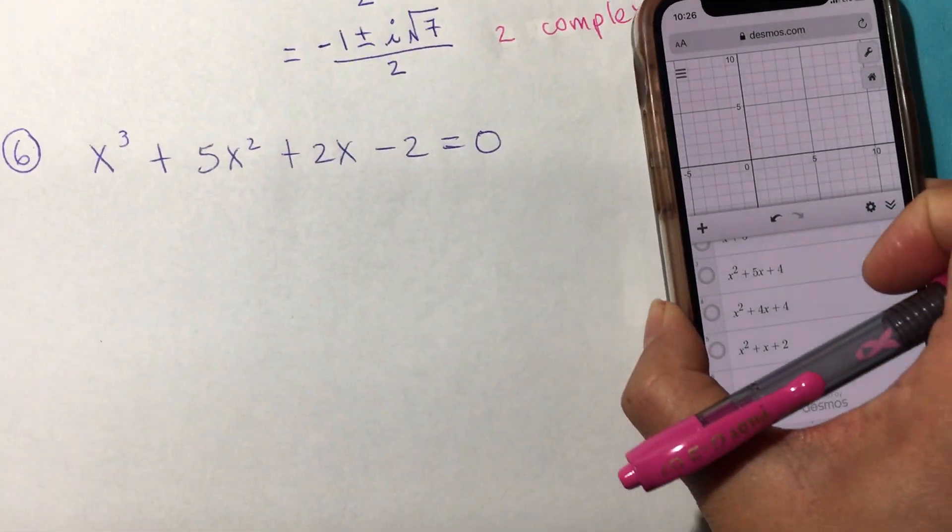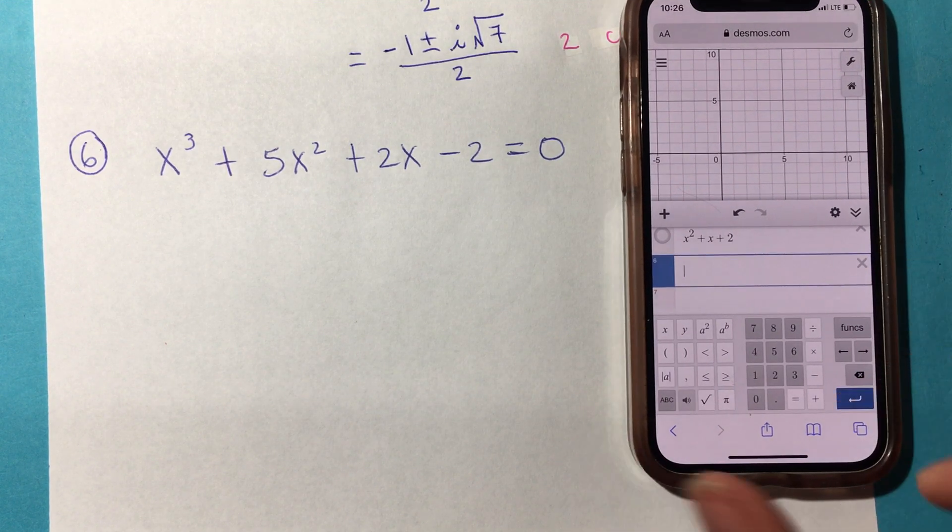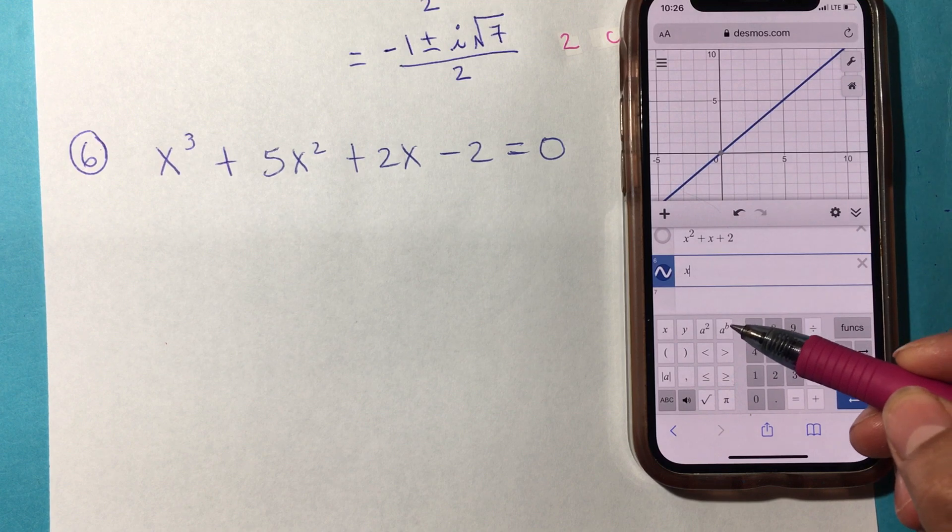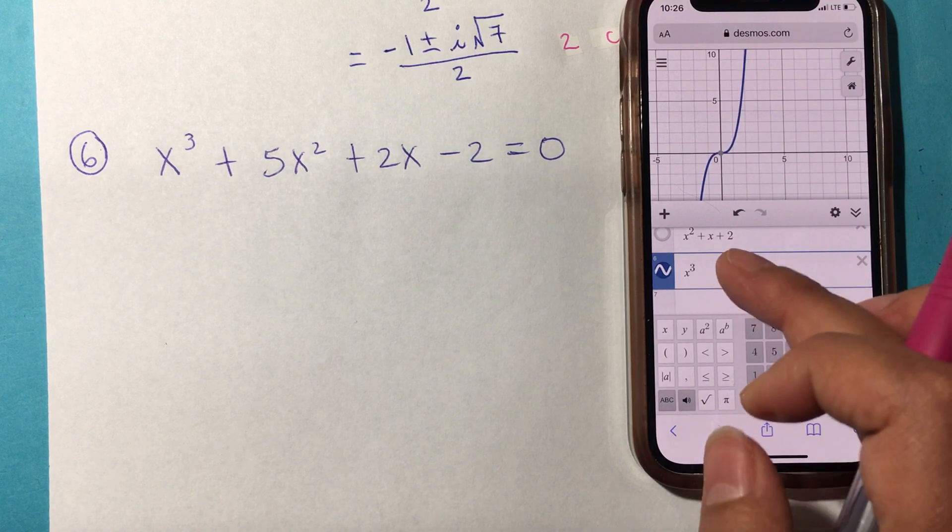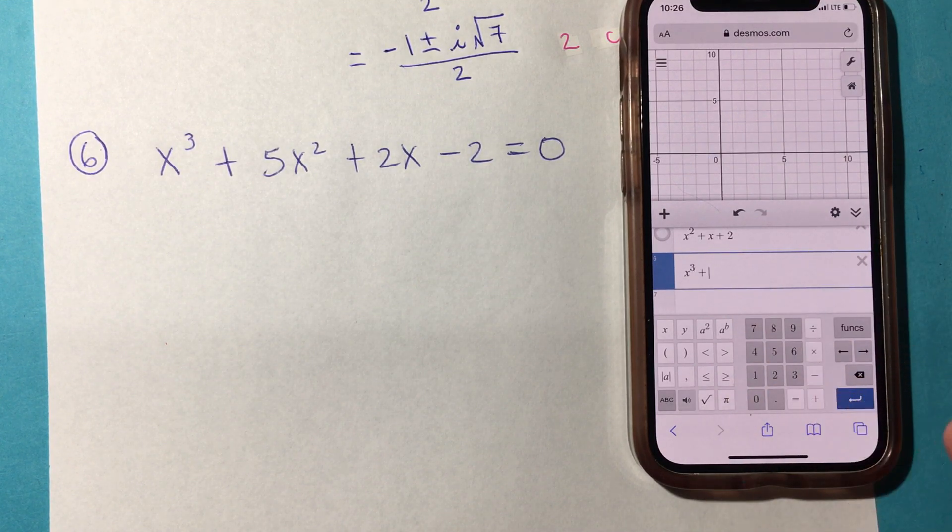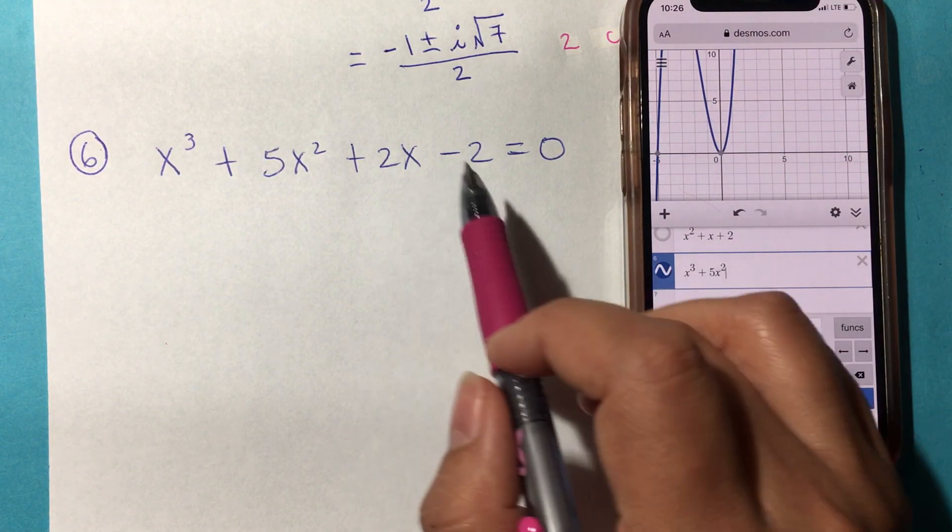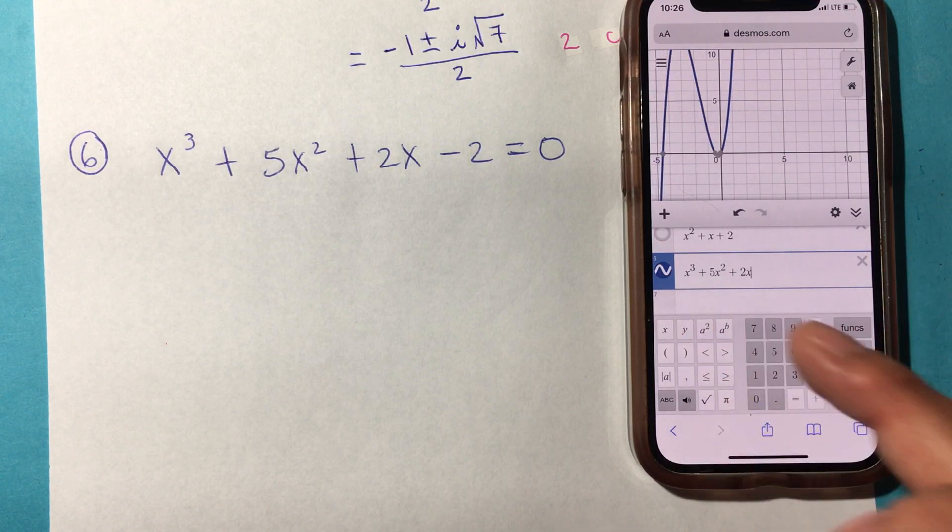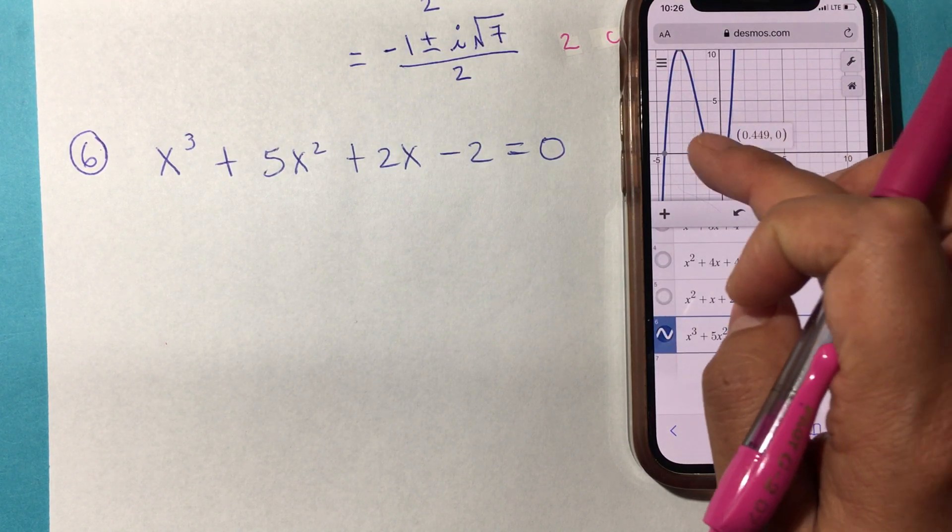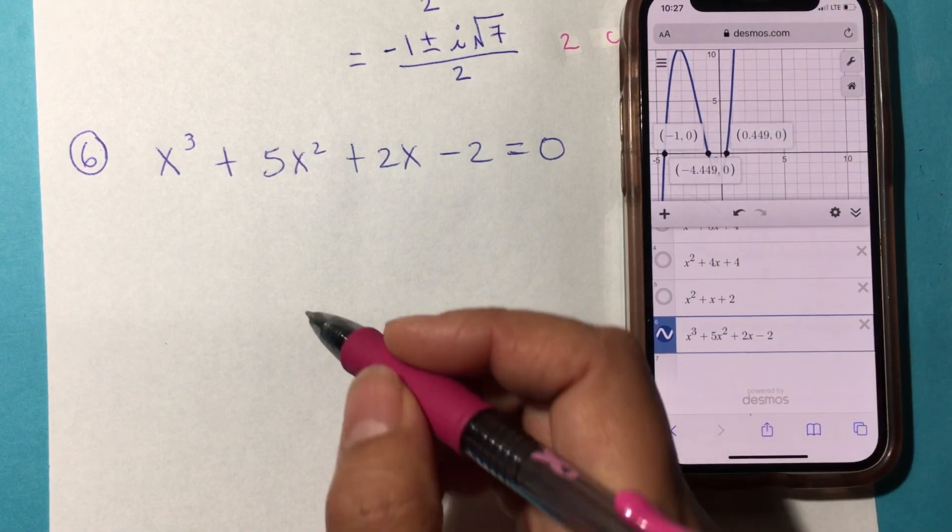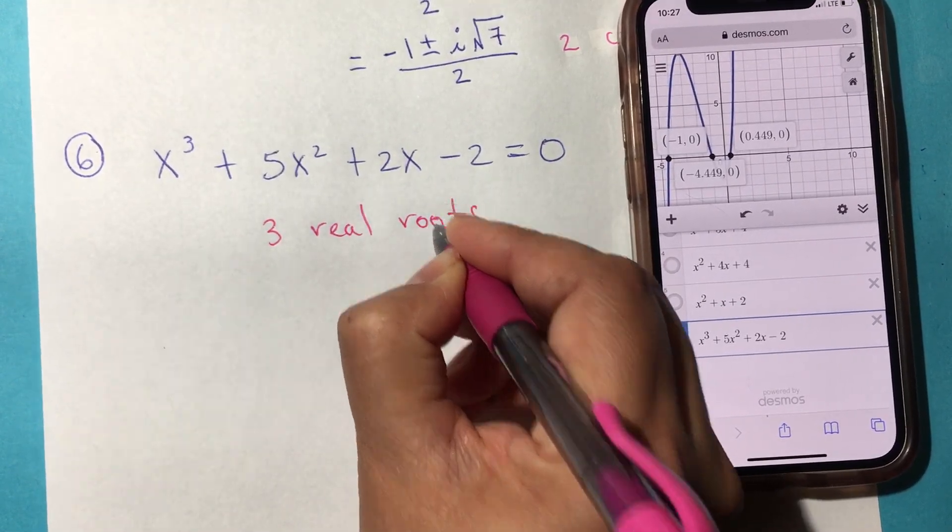For number six, we're not going to solve it because that requires factoring, we'll do that in a separate video. Let me show you on Desmos how it would look. For a cubed or higher degrees, you touch a to the b power and put the power in there. x³ + 5x² + 2x - 2. If you notice, those are your three solutions, and these are three real roots.